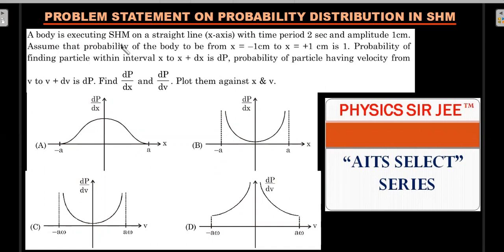Here we go with the formal reading of the question. A body is executing SHM on a straight line x-axis with time period 2 seconds and amplitude 1 centimeter. Assume that the probability of the body to be found between x equals minus a to x equals plus a is one. That's obvious—that is where you can certainly find the particle in between that big region.